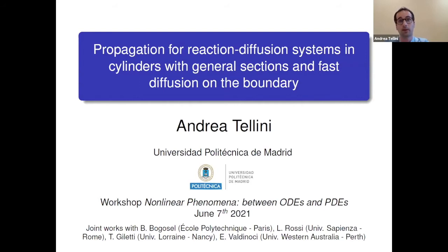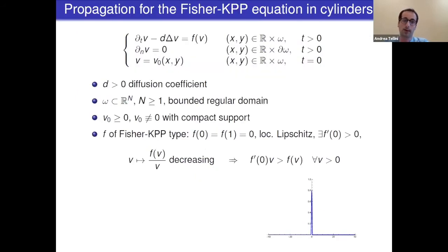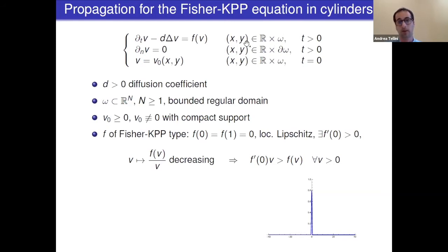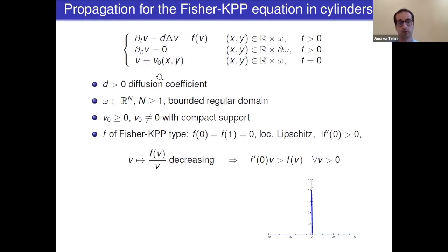For those who are not expert in propagation phenomena, I will start with the case of one reaction-diffusion equation and see how the eigenvalue approach applies. So let's start with the equation: partial derivative of V minus D Laplace V equals F of V, with D a positive constant diffusion coefficient. We are working in a cylinder with X the axial variable and Y the section variable, belonging to a bounded regular domain of R^n. We put homogeneous Neumann conditions — no flux on the boundary — and add an initial datum which is assumed to be compactly supported.